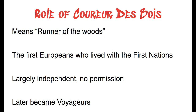The coureurs de bois — this means 'runners of the woods' in French. These are Europeans who lived a primarily Native life. They would live with First Nations and often create families with First Nations individuals. They were very much independent and had no permission to be there. These are the precursor to the voyageurs — essentially 18- to 24-year-old men from New France or Paris who didn't feel like they fit in with city life.